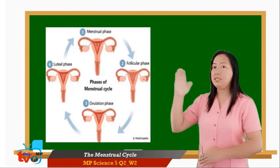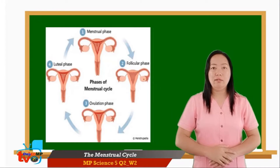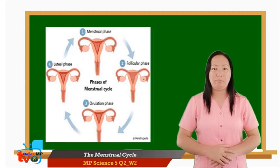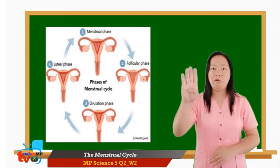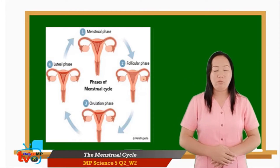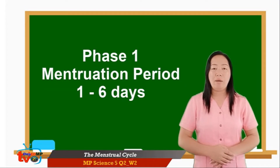Kindly study this diagram. The menstrual cycle is a series of changes in which an egg matures and the uterus is prepared for possible pregnancy. The menstrual cycle lasts for about 28 days. There are 4 phases of the menstrual cycle. Phase 1 is the menstruation period. This happens during days 1 to 6.